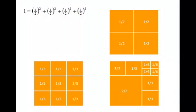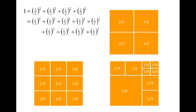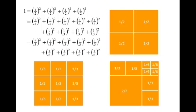But Moran noticed this: if you took the scaling factors — one-half, four times — squared them and added them up, you got 1. And if you took one-third nine times, squared them and added them up, you get 1. And even with a mixed example like two-thirds squared plus several one-third squared terms plus several one-sixth squared terms, it still totals up to 1.